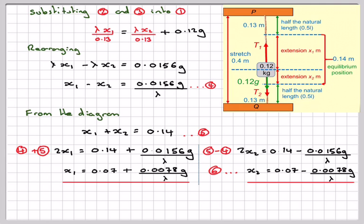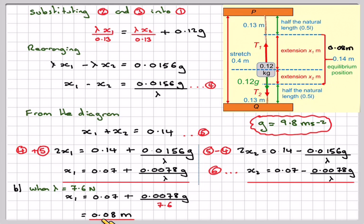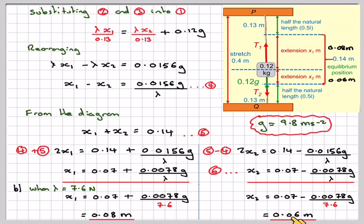Taking g = 9.8 m/s², when the modulus of elasticity is 7.6 Newtons, x1 = 0.07 + 0.0078 × 9.8 / 7.6, which gives 0.08 metres. And x2 = 0.07 − 0.0078 × 9.8 / 7.6, which gives 0.06 metres. These two extensions add up to 0.14 metres, as expected.